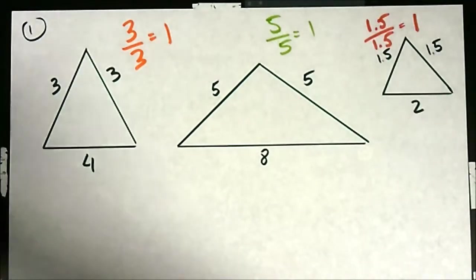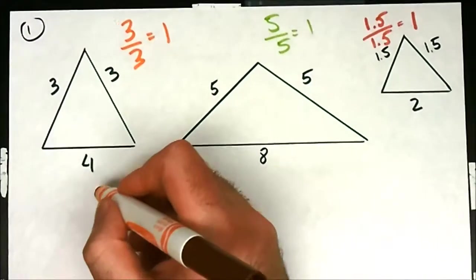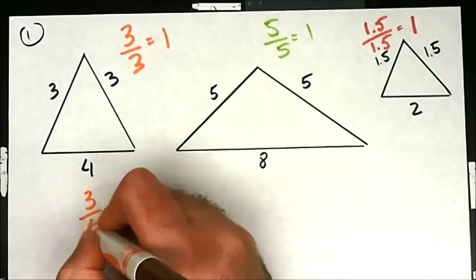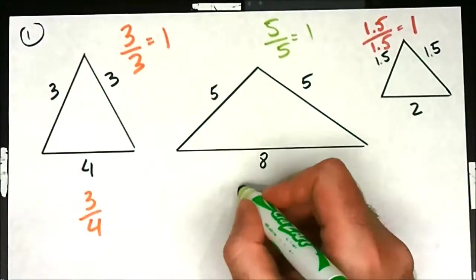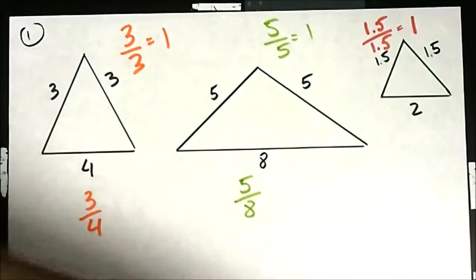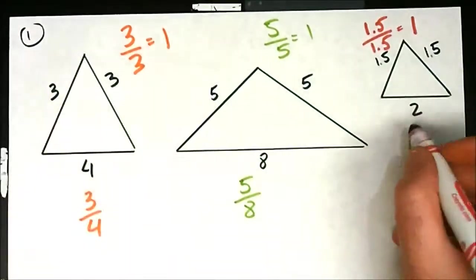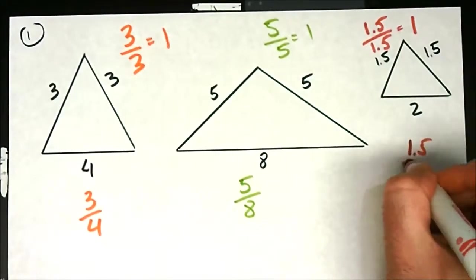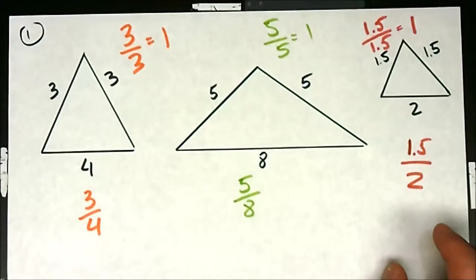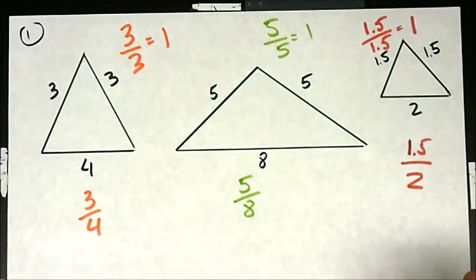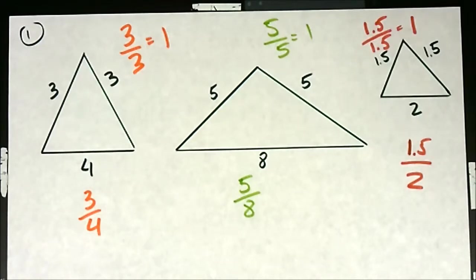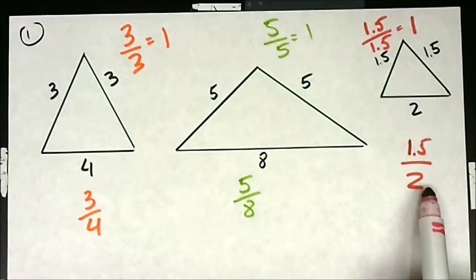Now, if you were to take the ratios of one of the side sides — and it doesn't matter because they're all the same — and the bottom side, then this happens. This one would be 3 over 4, this one would be 5 over 8, and this one would be 1 and a half over 2. Well, those don't look similar at all, at least not to begin with. But we can simplify them.